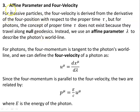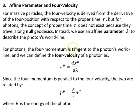Now: the affine parameter and four-velocity. For massive particles, the four-velocity is derived from the derivative of the four-position with respect to proper time tau. But for photons, the concept of proper time tau does not exist because they travel along null geodesics. Instead, we use an affine parameter lambda, by which we parameterize the path x as a function of lambda — the world line along which the photon travels.